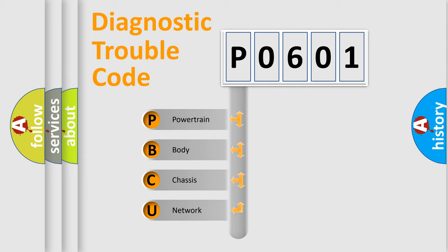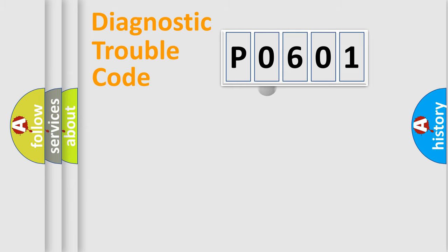We divide the electric system of the automobile into four basic units: Powertrain, Body, Chassis, and Network. This distribution is defined in the first character code.